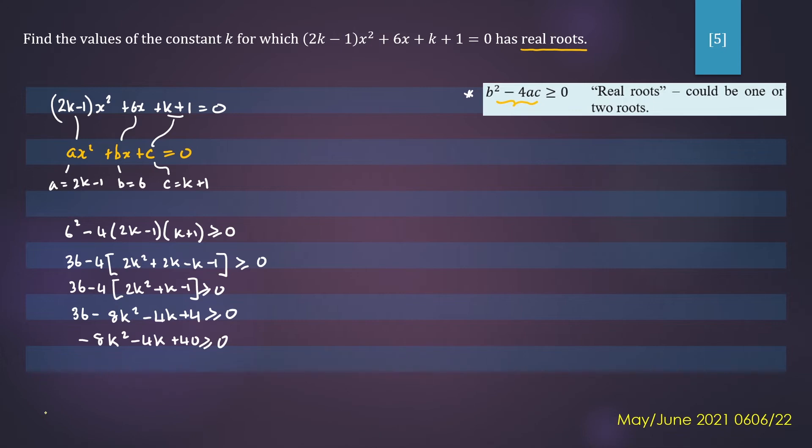Now we can make the inequality a bit easier to work with. So we'll divide it all by negative 4. So that will give us 2k² + k - 10 ≤ 0.